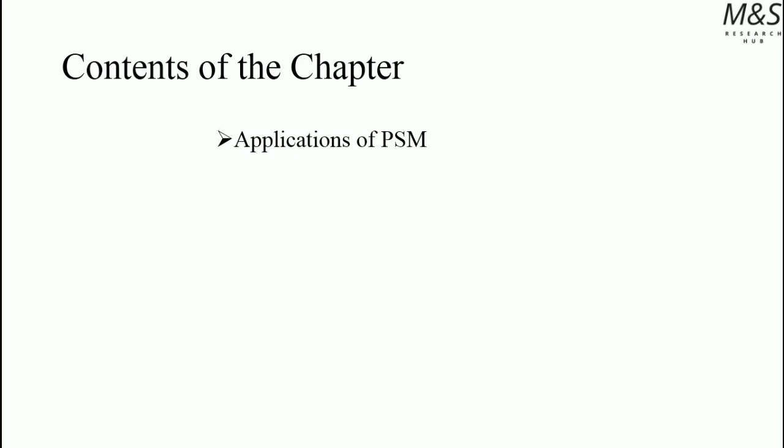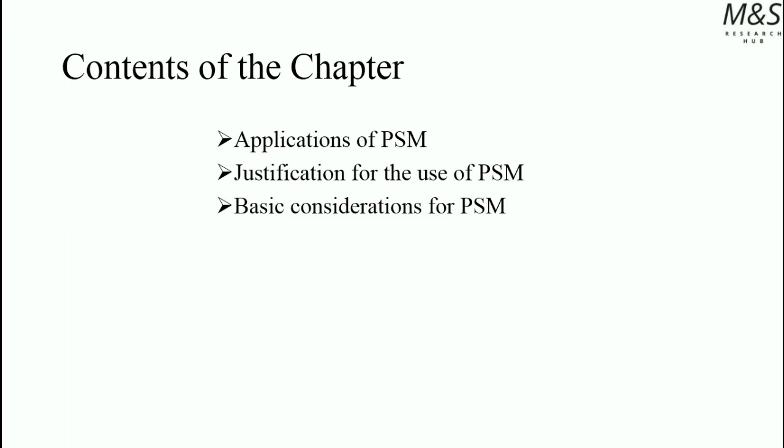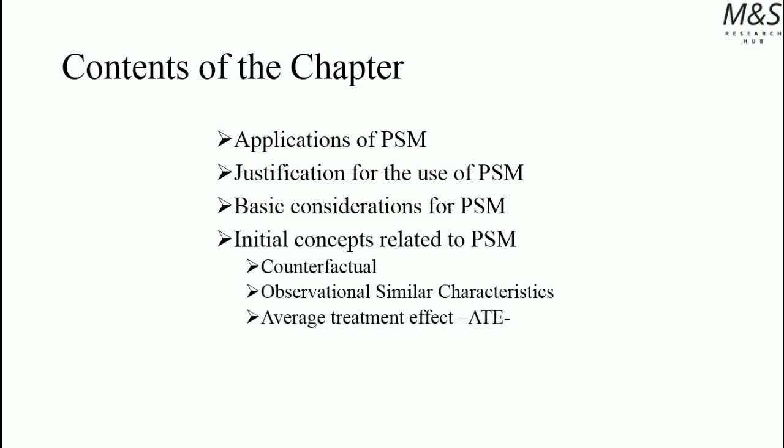Contents of the chapter: Application of Propensity Score Matching, Justification for the use of the approach, Basic Considerations for Propensity Score Matching, Initial Concepts Related to Propensity Score Matching — including Counterfactual, Observational Similar Characteristics, Average Treatment Effect, and finally the Propensity Score Matching: A Brief Review of Method and Theory.